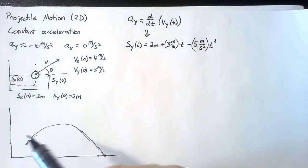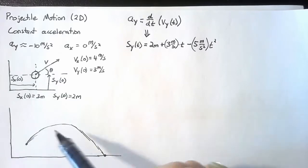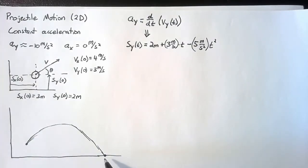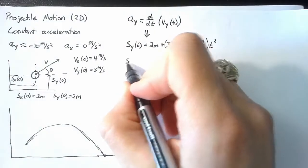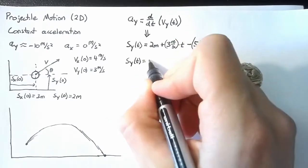So this equation describes the vertical location of the ball as it flies along. Now what we're interested in is when this ball hits the ground. And the way we can say that mathematically is just by saying that sy at some time t is equal to zero.